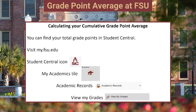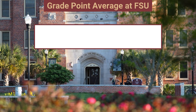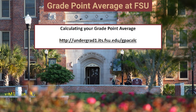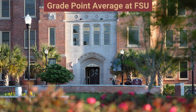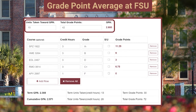If you're in the middle of a semester and you want to see how your potential term GPA could impact your cumulative GPA, you can calculate your grade point average with the FSU GPA calculator. In this example, you can see at the top that the student has taken 15 credits toward their GPA and has earned a previous total of 42 grade points, which gives them a current cumulative GPA of 2.8.